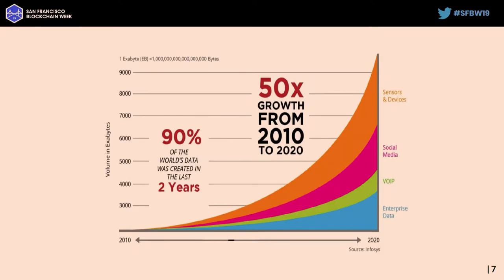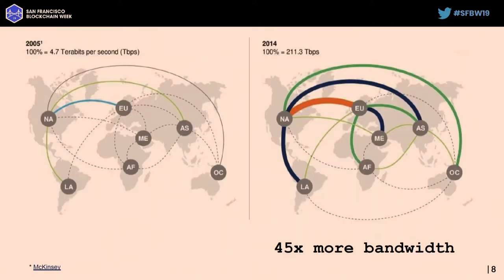The data amounts are growing very fast, significantly. From 2005 to 2014, the amount of traffic going between continents increased 45 times, and now it's even more. If we keep increasing the traffic we're sending over central channels, we will not be able to serve all the new devices and new data coming connected to the internet.